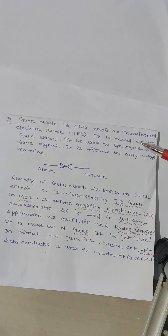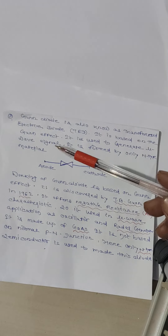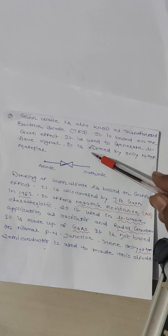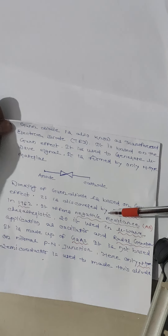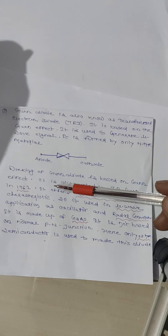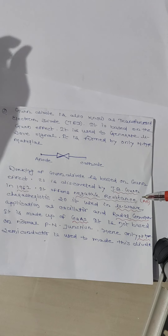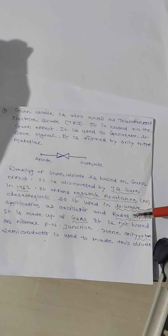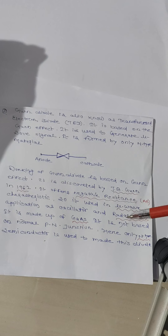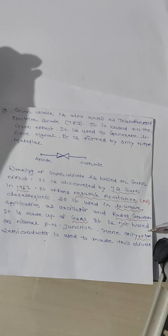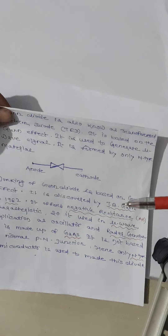The Gunn diode is also known as the transferred electron diode. It is based on the Gunn effect and is used to generate microwave signals. It is formed by only n-type material. It was discovered by J.B. Gunn in 1962. It offers negative resistance, as seen in the AB region of the characteristic. It is used in microwave applications as an oscillator and in radar generators. It is made of gallium arsenide — a compound semiconductor — and is not based on a normal p-n junction.